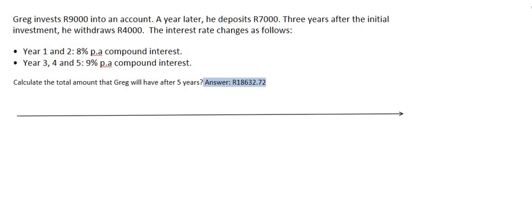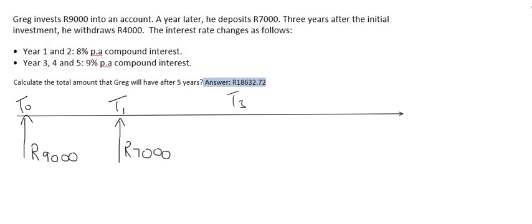This timeline is going to show us all the money coming in and coming out. So Greg starts with 9,000 rand - that's money coming in - at t0, the very beginning. A year later at t1, he deposits 7,000 rand, meaning more money is coming in. Three years after the initial investment, so at t3, he withdraws 4,000 rand - that's money coming out. That's the timeline complete; no interest rate is shown on this timeline.